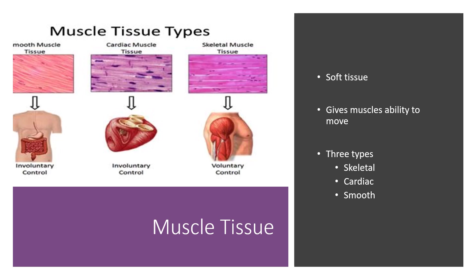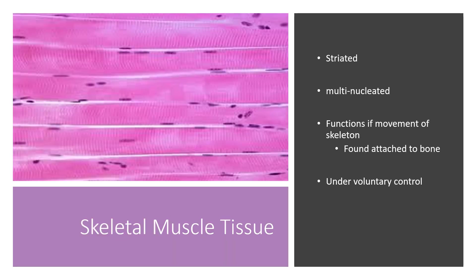Moving on to muscle tissue. Muscle tissue is soft tissue that gives your muscles the ability to move, your heart the ability to pump, and your GI tract organs the ability to distend. There are three types: skeletal, cardiac, and smooth. Skeletal muscle is striated and multinucleated. It functions in the movement of the skeleton, found attached to bone, and it is under voluntary control.